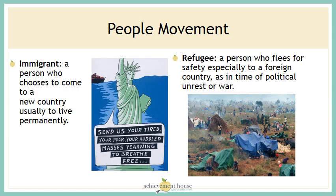The concept of people movement could also be looked at on a grander scale — people moving from one country to another, and looking at the reasons why people do that. If you are an immigrant, an immigrant is a person who chooses to come to a new country, usually to live permanently. They've decided for one reason or another to leave where they are and build a new life in a new country. A refugee is a person who flees for safety, especially from a foreign country at a time of political unrest or war. So if there was a political environment or a war going on in your country, you may be forced to flee your country for safety reasons.